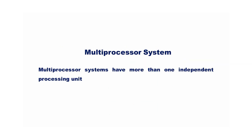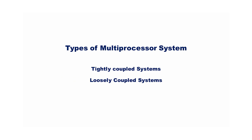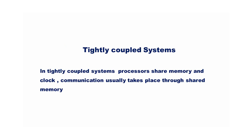The next type of operating system is one that supports a multiprocessor system. A multiprocessor system has more than one independent processing unit. Multiprocessing is the simultaneous execution of two or more processes by a computer having more than one CPU. There are two types of multiprocessor systems: tightly coupled systems and loosely coupled systems. In tightly coupled systems, processors share memory and clock, and communication usually takes place through shared memory.